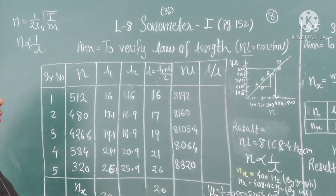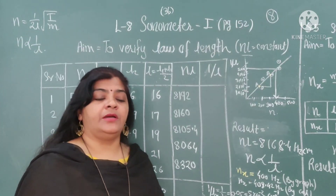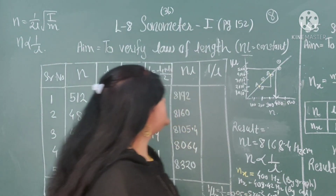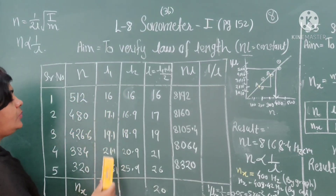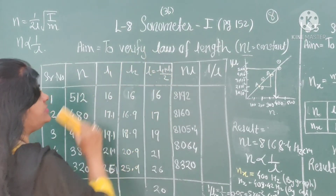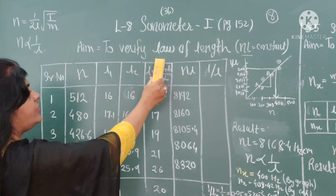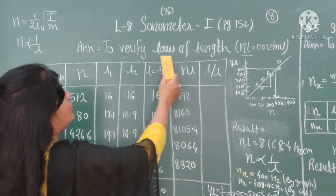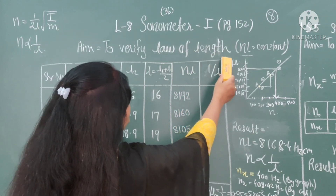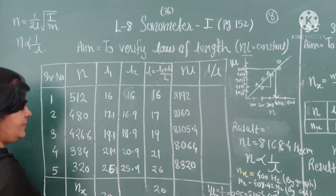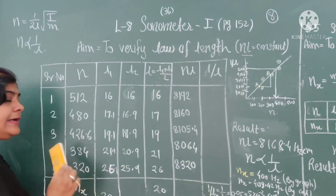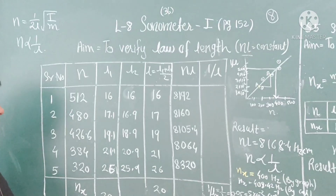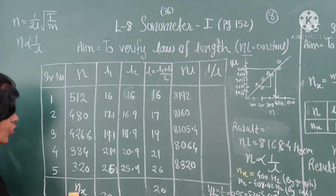Now, if the question asks you to calculate the unknown frequency by the sonometer experiment, then your aim will be changed to: determine the unknown frequency by the law of vibrating strings or by the sonometer experiment. At that time, one more observation will be added for the unknown frequency.